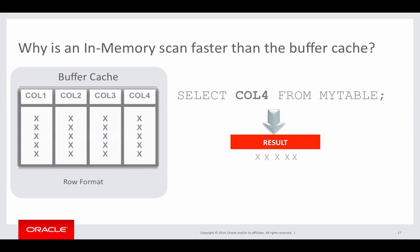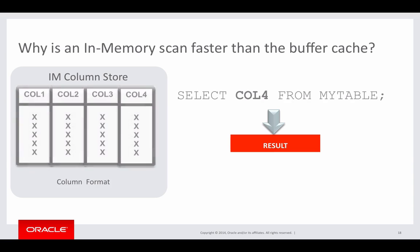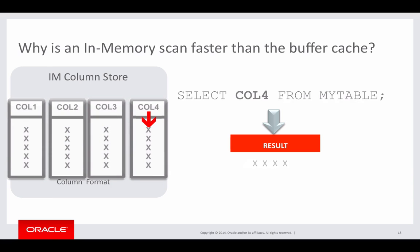If I issue that same query but this time with my table in the column store, because each column is stored separately, we go directly to column four, only read column four without reading any of the other columns in the table, and extract out the values needed to answer the query. The volume of data being accessed is far less in the column store than in the buffer cache — not only am I only accessing the column I need, but I'm accessing that column in a compressed format.